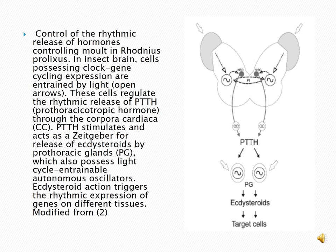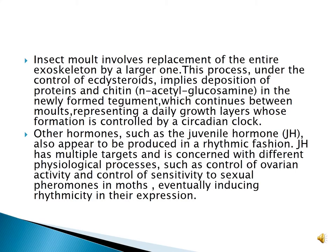PTTH stimulates and accesses ecdysone glands for release of ecdysteroids by the prothoracic gland, which also possesses light-cycle-entrainable autonomous oscillators. Ecdysteroid action triggers the rhythmic expression of genes in different tissues. Insect moulting involves the replacement of the entire exoskeleton by a larger one, a process under the control of ecdysteroids.